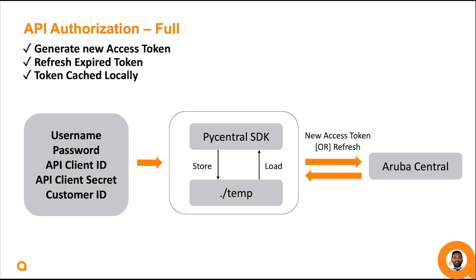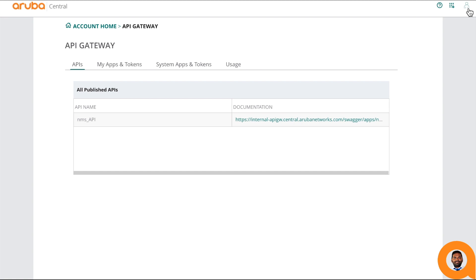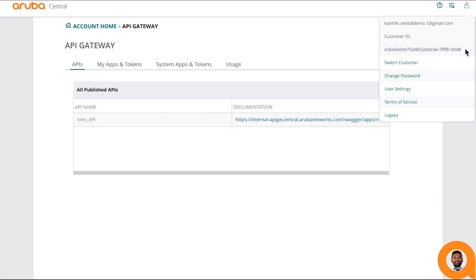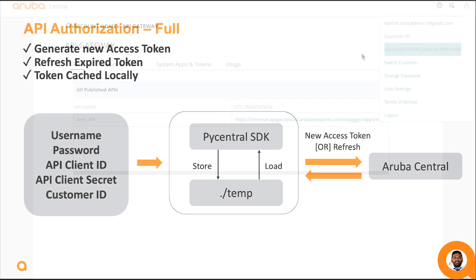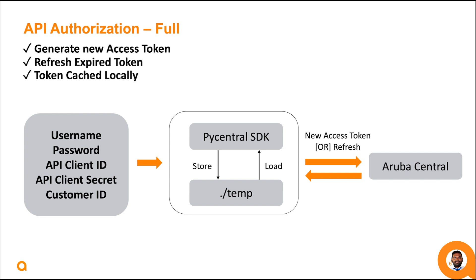To find the Aruba Central customer ID, click on the user icon in the Aruba Central user interface. Upon providing all this information to PyCentral SDK, a new access token will be generated and stored inside a temp directory in a JSON file. In this method, the SDK has all the information needed to generate a new access token as well as to refresh expired access tokens.